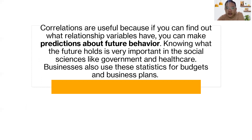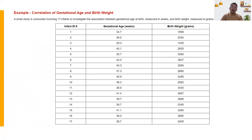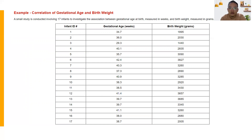Correlations are useful because if you can find out what relationship variables have, you can make predictions about future behavior. Knowing what the future holds is very important in the social sciences like government and healthcare. Businesses also use these statistics for budgets and business plans. Here is an example of correlation: gestational age and birth weight — a small study conducted involving 17 infants to investigate the association between gestational age at birth measured in weeks and birth weight measured in grams.